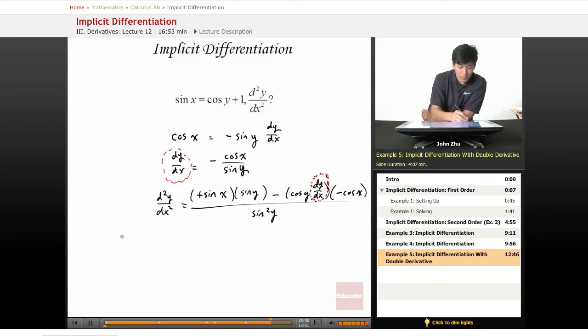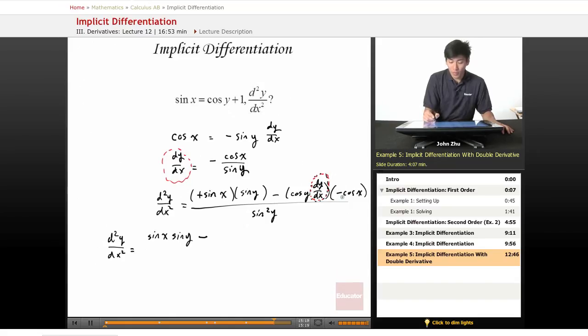So we rewrite this. d²y/dx² equals sine of x times sine of y minus, well, there's a negative term here, so we know that we're going to be adding, but then we replace this dy/dx and there's another negative term, so three negatives equals one negative. So we'll rewrite this, cosine of x cosine of y times cosine of x sine of y.